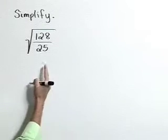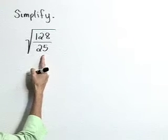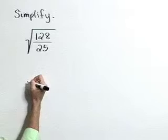Simplify the square root of 128 over 25. Well, to simplify, we want to pull as much out of that square root radical as possible.